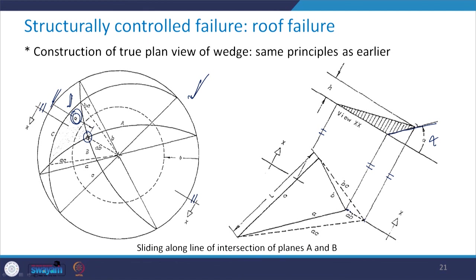Taking the projection lines from the stereo plot and drawing a line at angle alpha from the appropriate point — wherever it intersects gives the height h of the wedge.